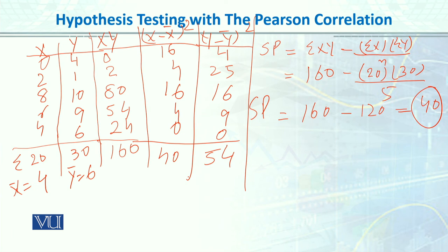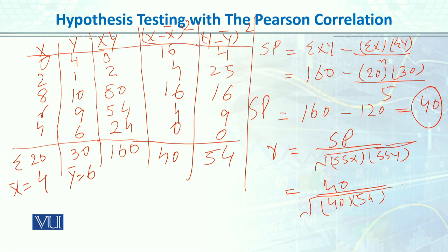We subtract and square all values using your calculator. The formula for r is: SP divided by the square root of (sum of square deviations of x times sum of square deviations of y). SP we calculated is 40. Sum of squares for x is 40, and for y is 54. Taking the square root and solving, the answer we get by calculator is 0.86.